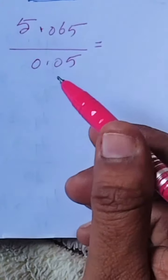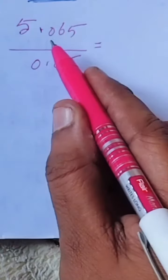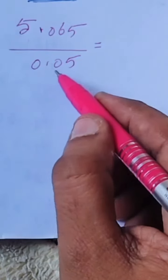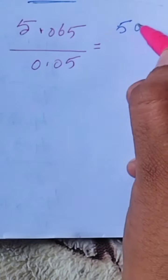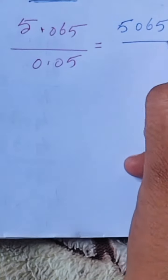This is the division of decimals: 5.065 by 0.05. So how we write this decimal: 5,065 by...